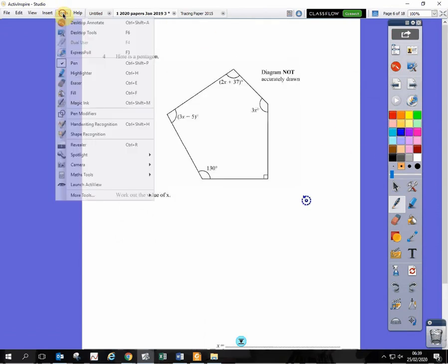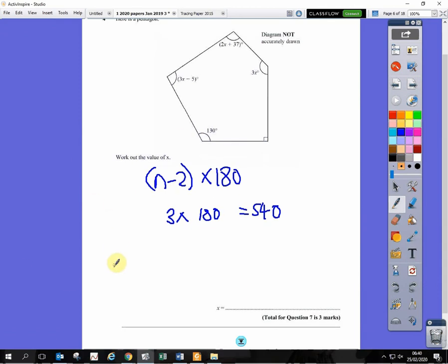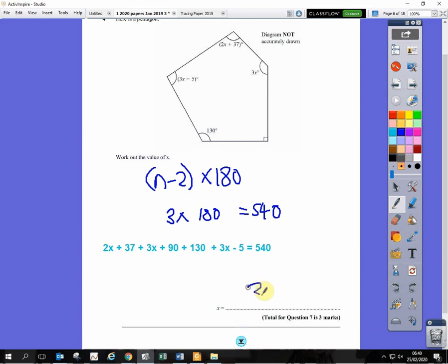Next question. So on this question, you need to remember what the angles add up to in a five-sided shape. So the formula is this. You take away 2 from the number of sides, and then multiply it by 180. So 5 take away 2 is 3. 3 times 180 is 540. So 540 degrees in the shape. All of the angles inside this shape add up to make 540 degrees. So we have something like this. Add all of the angles up inside the shape. So we have 2x plus 37 plus 3x plus 90 plus 130 plus 3x minus 5. And that all equals 540. And when you tidy up and solve this equation, we end up with x equals 36.